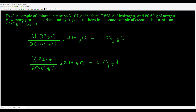Likewise for hydrogen: there are 7.823 grams of hydrogen per every 20.69 grams of oxygen in the first sample. Multiplying by 3.141 grams of oxygen in the second sample, the oxygen units cancel, giving 1.188 grams of hydrogen in the second sample. That's an example of how we use the law of definite proportions or constant composition.